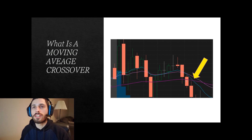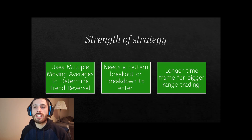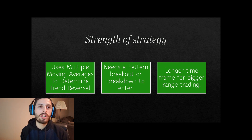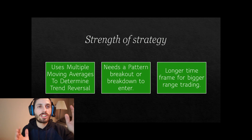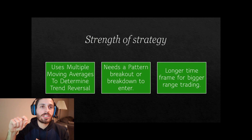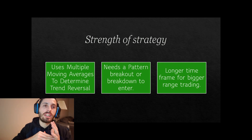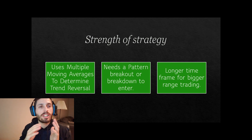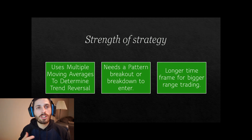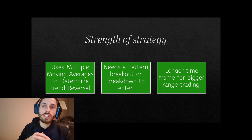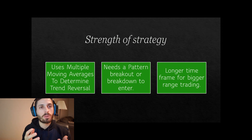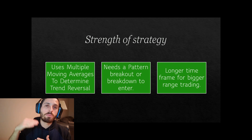Now let's talk about the strength of the strategy. It uses multiple averages to determine the trend reversal. We use multiple moving averages so that we have the short range, intermediate, and long range all covered. Using those moving averages, we take the trade — it needs a pattern breakout or breakdown to enter. The key is we're using a longer time frame, which allows bigger range trading, helping you capture bigger profit with a calculated risk and return.